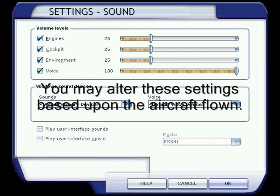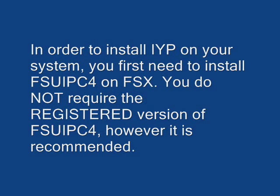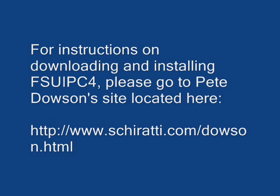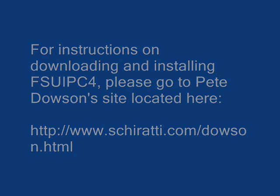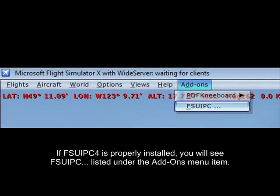You may alter these settings based upon the aircraft being flown. In order to install IYP on your system, you first need to install FSUIPC4 on FSx. You do not require the registered version of FSUIPC4, however it is recommended. For instructions on downloading and installing FSUIPC4, please go to Pete Dawson's site. If FSUIPC4 is properly installed, you will see FSUIPC listed under the Add-Ons menu item.